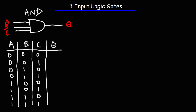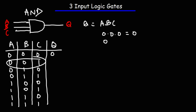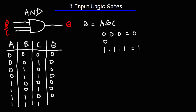The formula for the three input AND gate is Q equals A times B times C. So what happens if you multiply three zeros? 0 times 0 times 0 is 0, so that's the output. For 0 times 0 times 1, the output is also 0. The only time the output is going to be a 1 is if all inputs are active — 1 times 1 times 1 is 1.